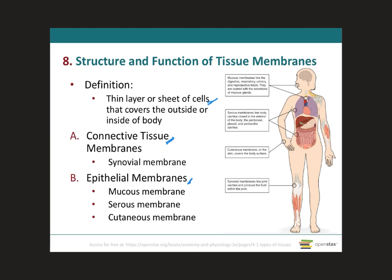A synovial membrane is a type of connective tissue membrane that lines the cavity of a freely movable joint. For example, synovial joints surround the joints of the shoulder, the elbow, and the knee, which are freely movable joints.